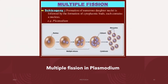In multiple fission in Plasmodium, the nucleus divides mitotically first, and the dividing cell is known as the schizont. The nucleus undergoes multiple mitosis, followed by cytokinesis — division of the cytoplasm — to produce multiple daughter cells called merozoites.